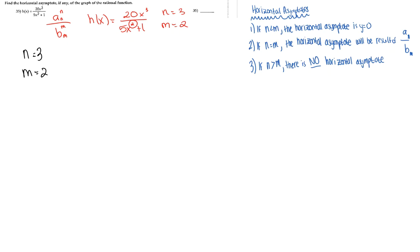Looking at the first case, we can already see that 3, which is our n, is not less than 2, which is our m. So we are not going to look at the first case. And we already know it's not going to be the second case because 3 is not equal to 2.